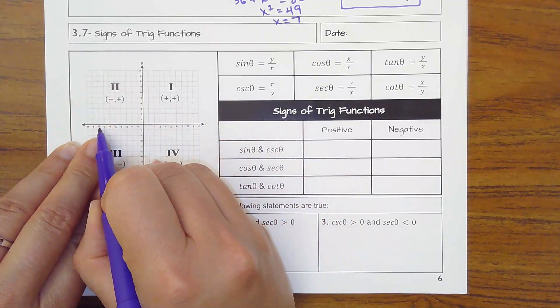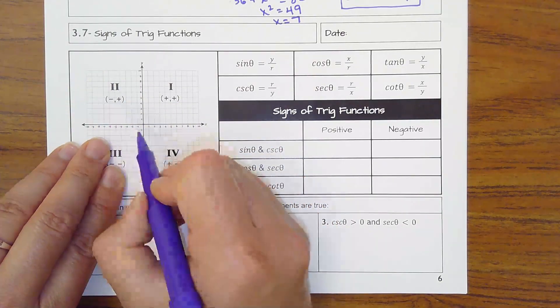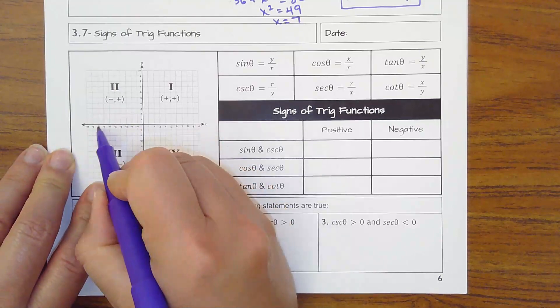Quadrant 2, x's are negative, y's are positive. Quadrant 3 is everything's negative because you go left and down.